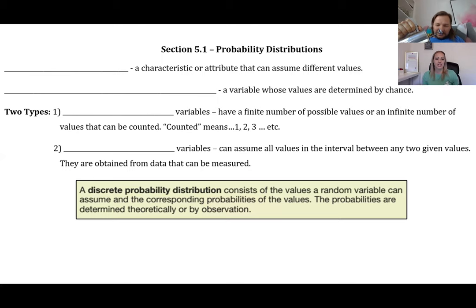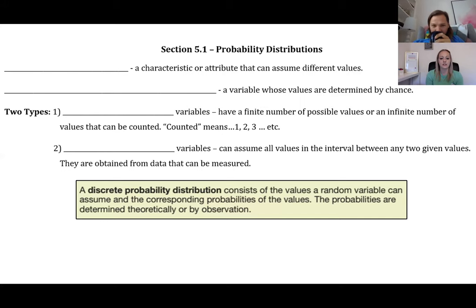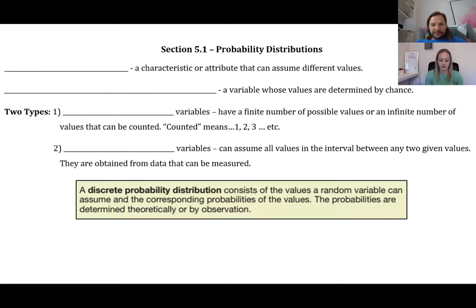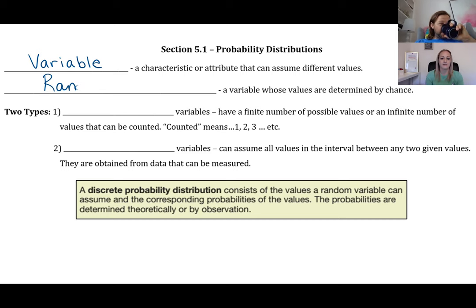Today we're going to start chapter five. Section 5.1 is going to be all about probability distributions. Let's review a couple of definitions we've already seen: a variable is a characteristic or attribute that can assume different values, and a random variable is a variable whose values are determined by chance.